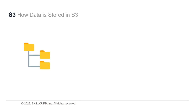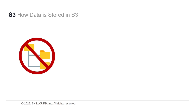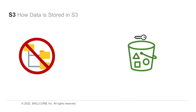It's a common misconception that files are stored in S3 the same way they are in our computer systems — in a file hierarchy. Instead, files in S3 follow a flat URL namespace where each object has its own unique key. For example, a file on your desktop might be located at 'C:/Users/Home/Desktop/file', but in S3 it would have a unique URL like 'bucketname.s3.amazonaws.com/unique-key'.